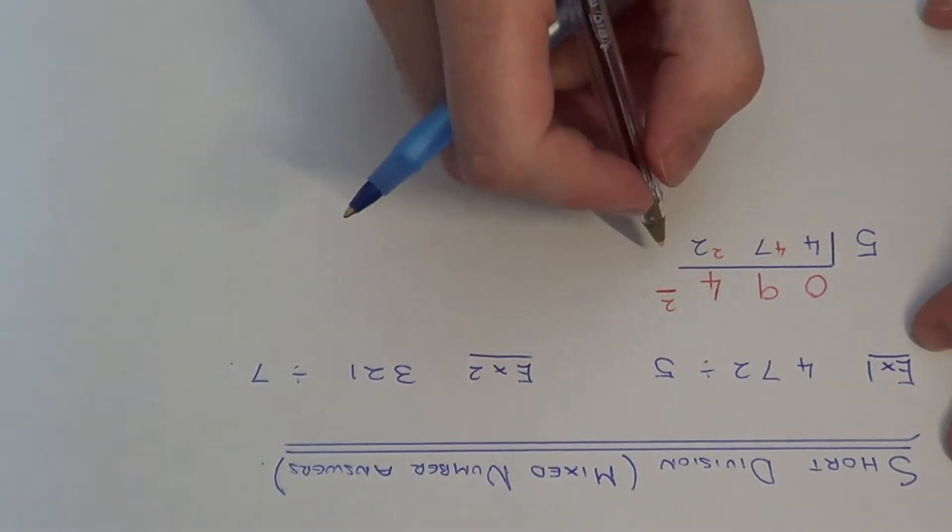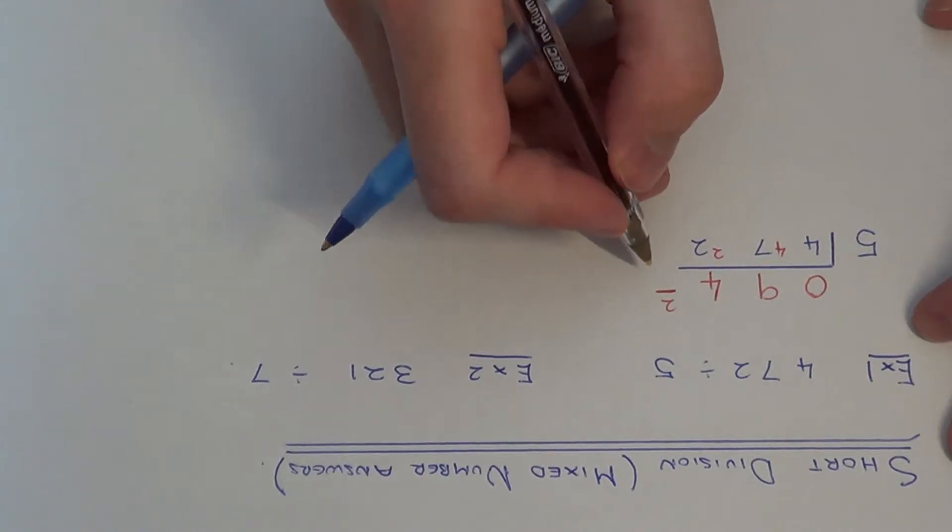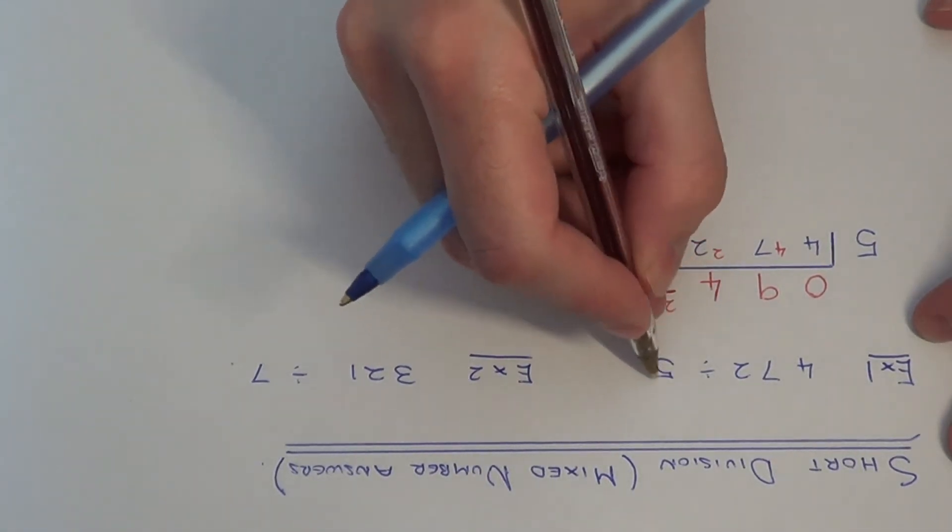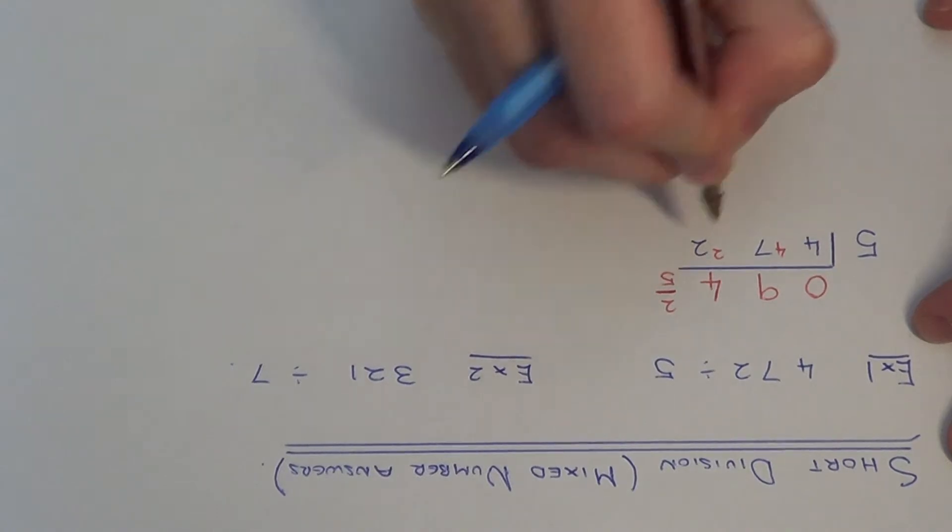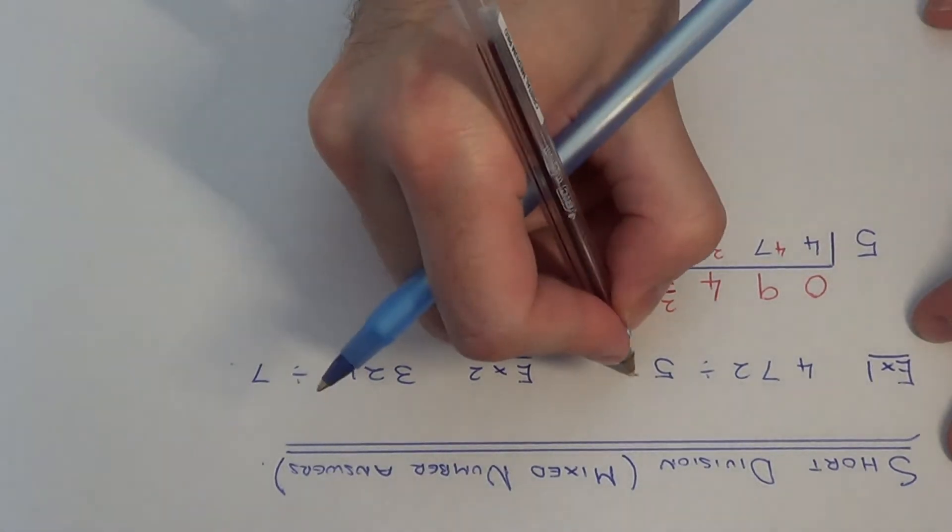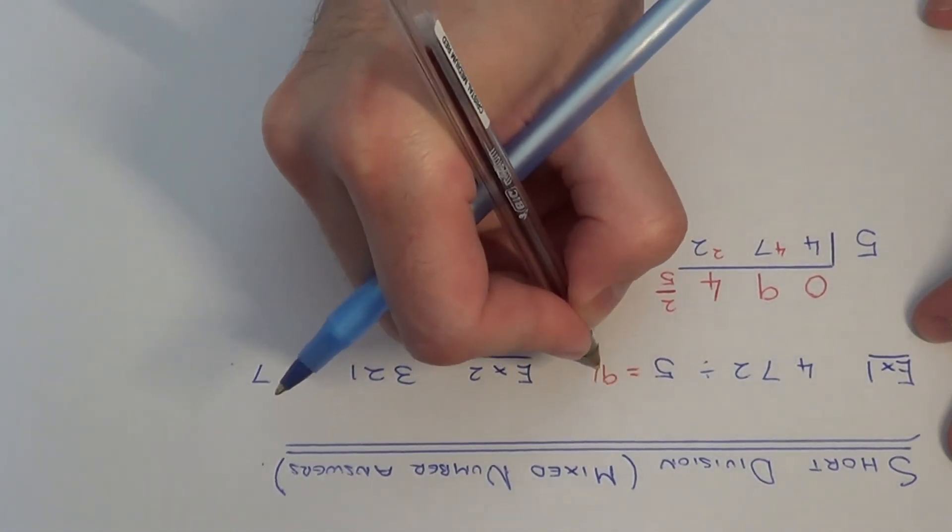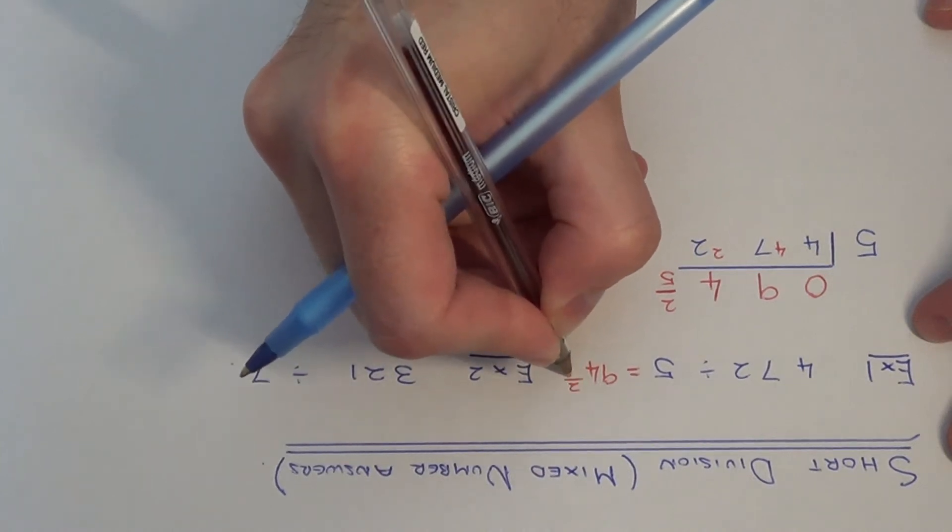And on the denominator of the fraction we put the number that we divided by, which was 5. So our final answer is 94 and 2 fifths.